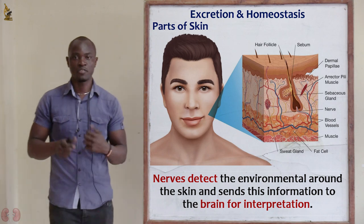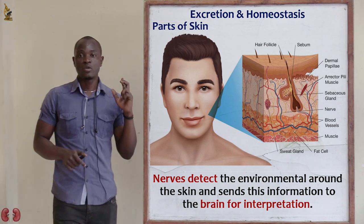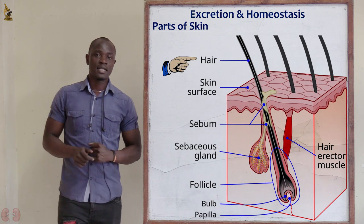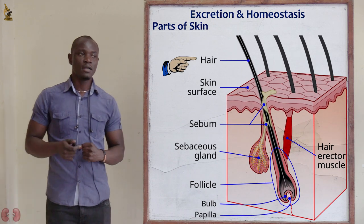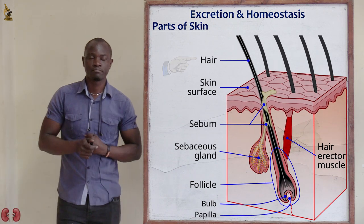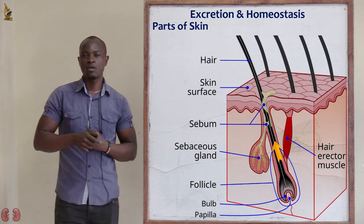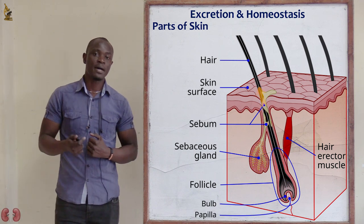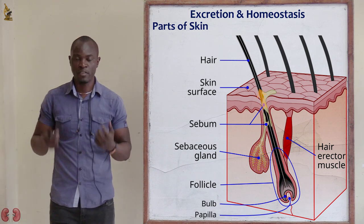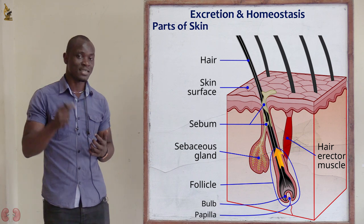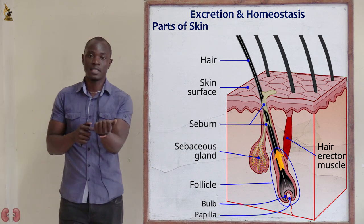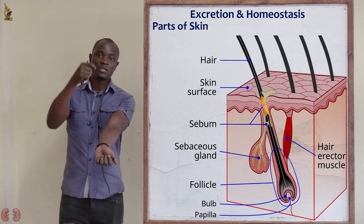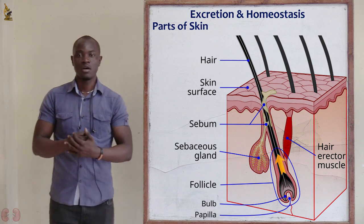Next we have hair. Hair mainly arises from the root hair, also called the hair papilla, from which the root hair develops. After it has elongated, we can see it on the surface of the skin.